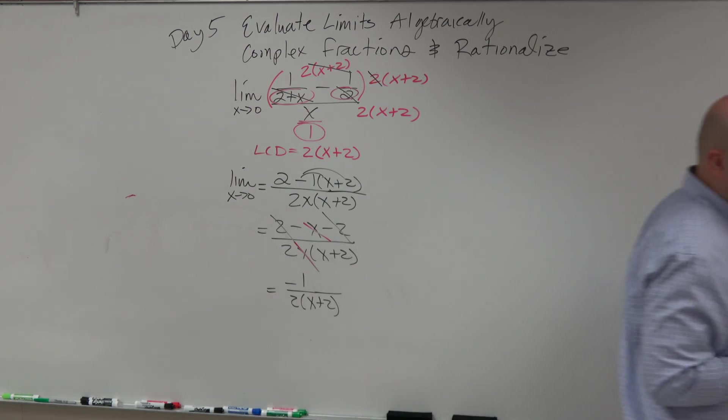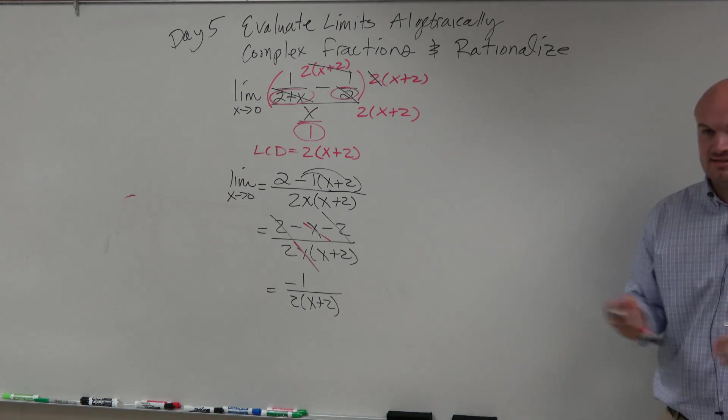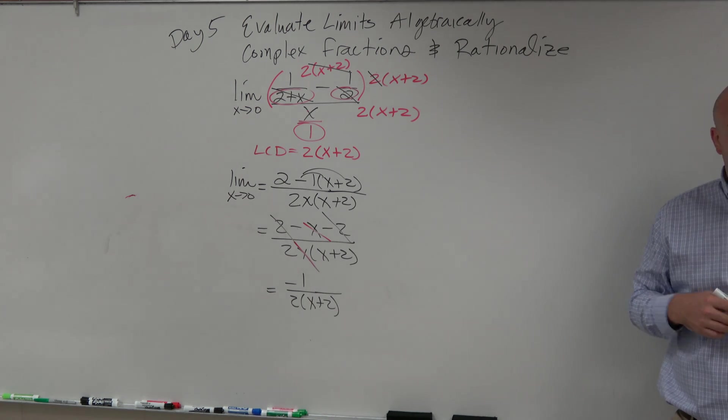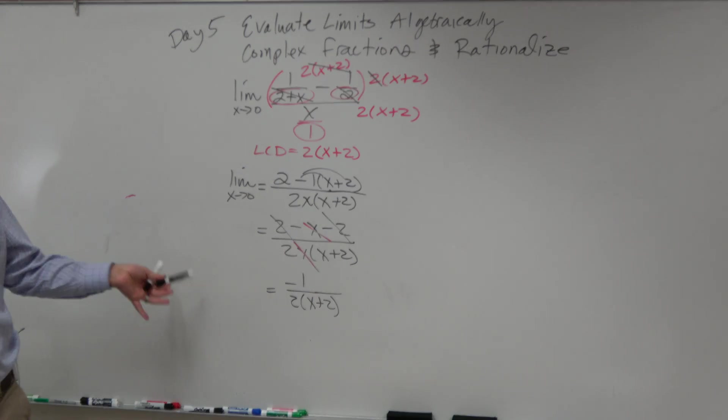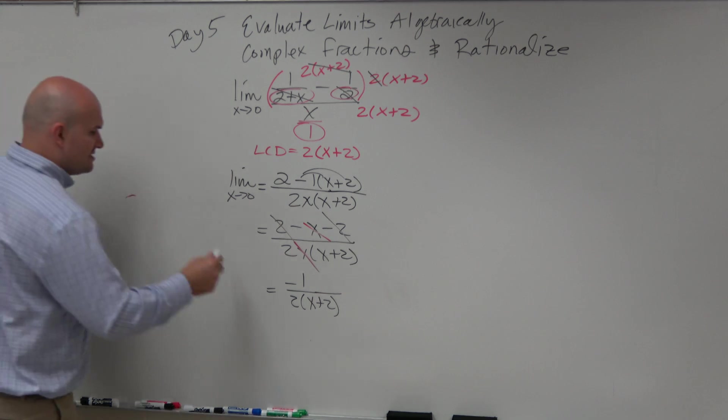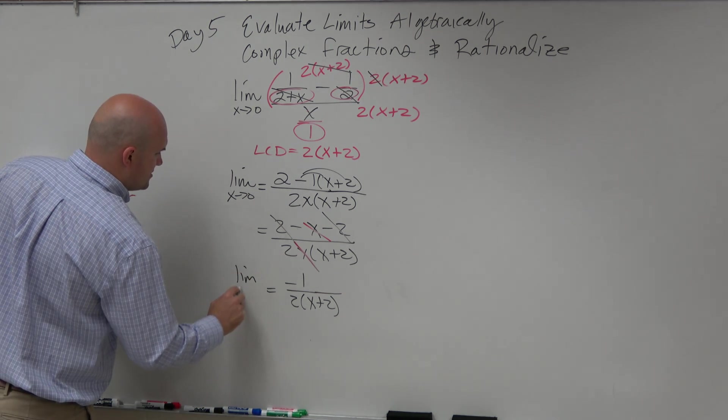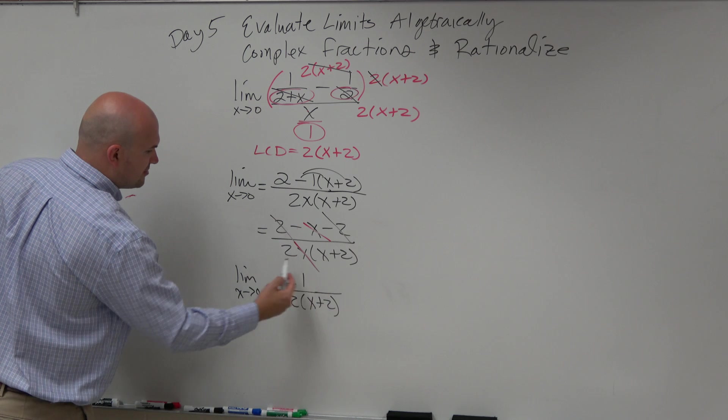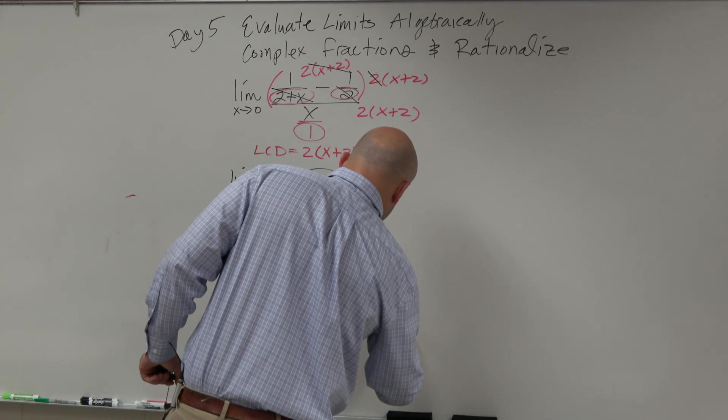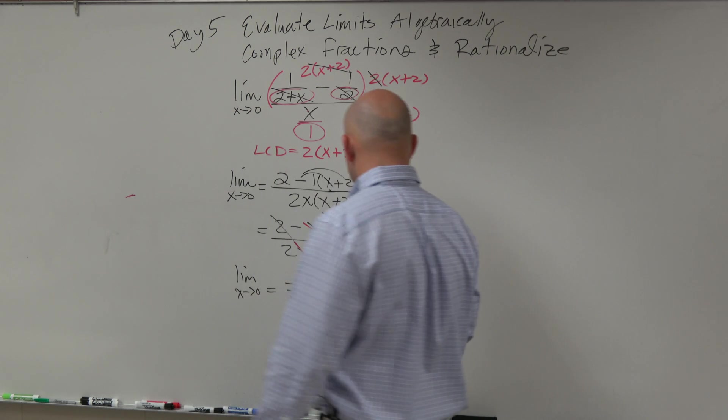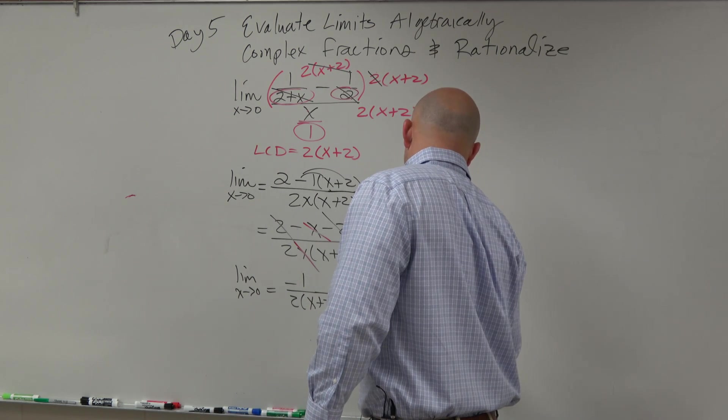Now, after simplifying this, now can we directly substitute? Yeah, now it's perfect. We just had to simplify this a little bit. Simplify as x approaches 0. So we're just going to plug that in. So we have negative 1 over 2 times 0 plus 2. 0 plus 2 is 2 times 2 equals negative 1 fourth.